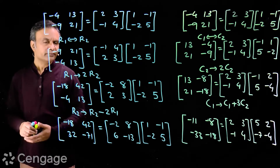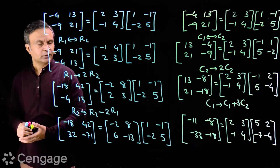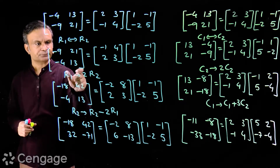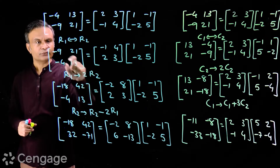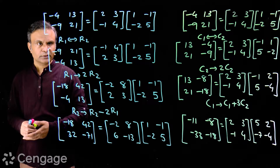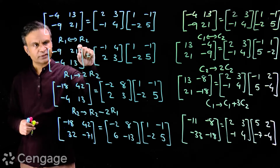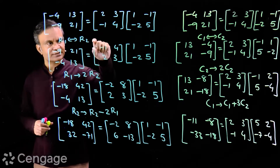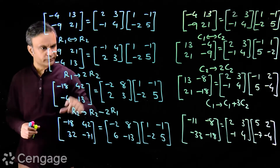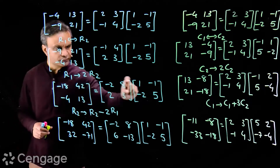Now I am doing one more elementary row transformation — I am multiplying row 1 with 2. I am multiplying row 1 with 2 in this matrix, simultaneously in this matrix. So I have here this new system.